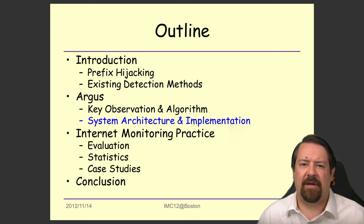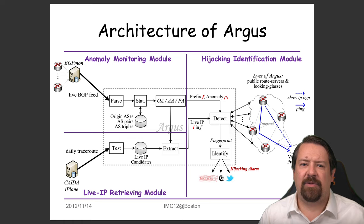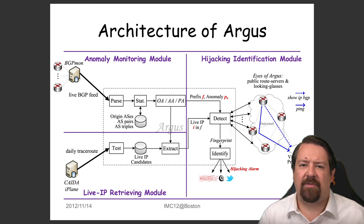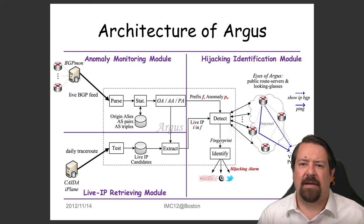The Argus system takes in data from multiple sources, including live BGP from BGPMon for monitoring the control plane, and a daily traceroute from CAIDA to find responding IP addresses in different prefixes without scanning the entire internet. With these two inputs, it performs hijacking identification based on the BGP feed alone. When it detects an anomaly, it looks up live IPs learned from the CAIDA data and sends probe requests to multiple looking glasses on the internet, then identifies the fingerprint and classifies the event as malicious or otherwise.